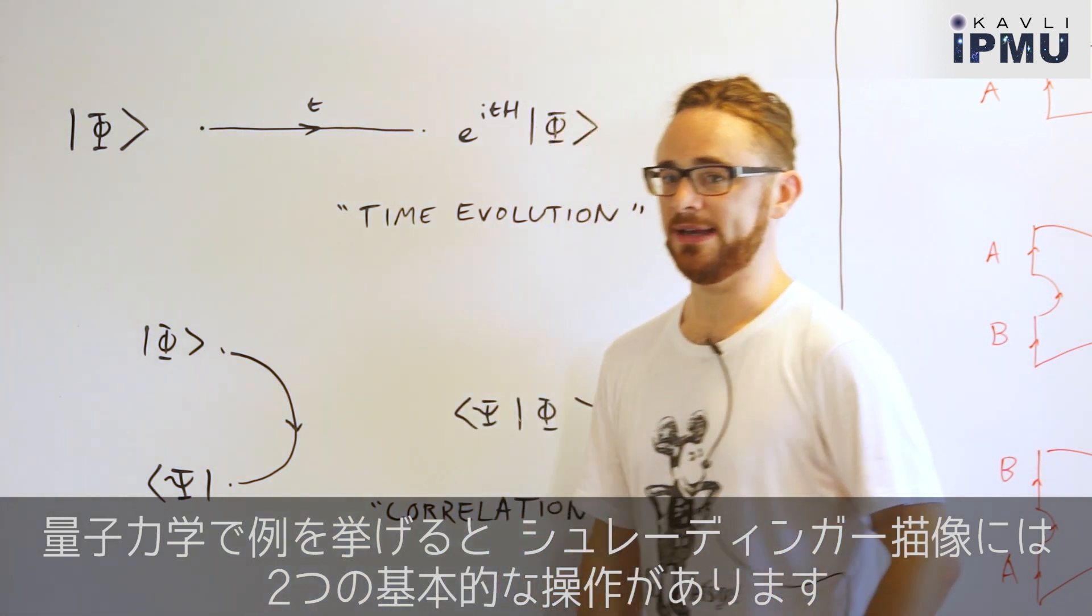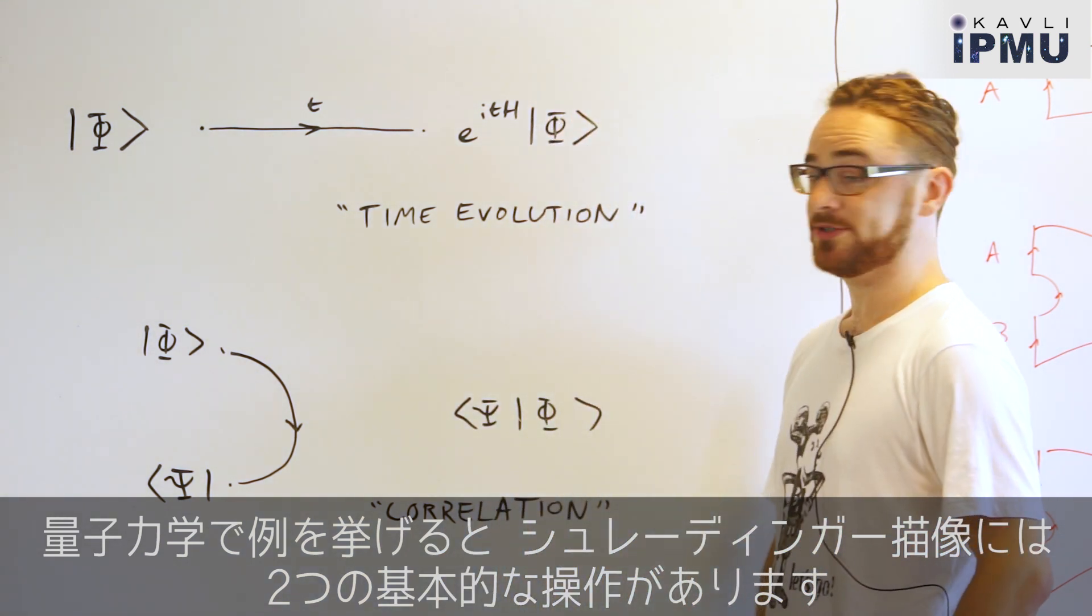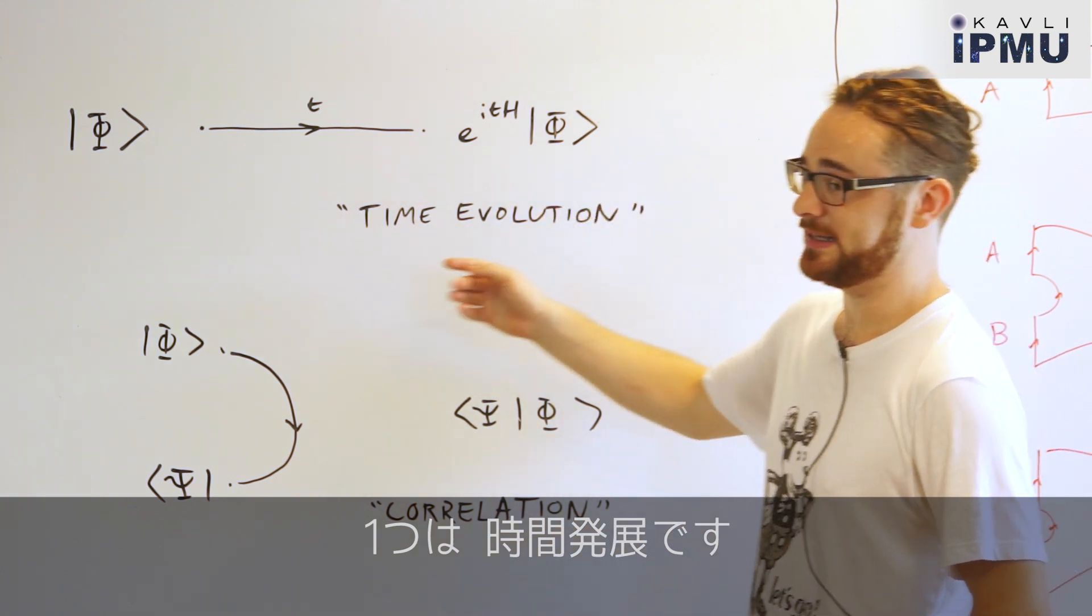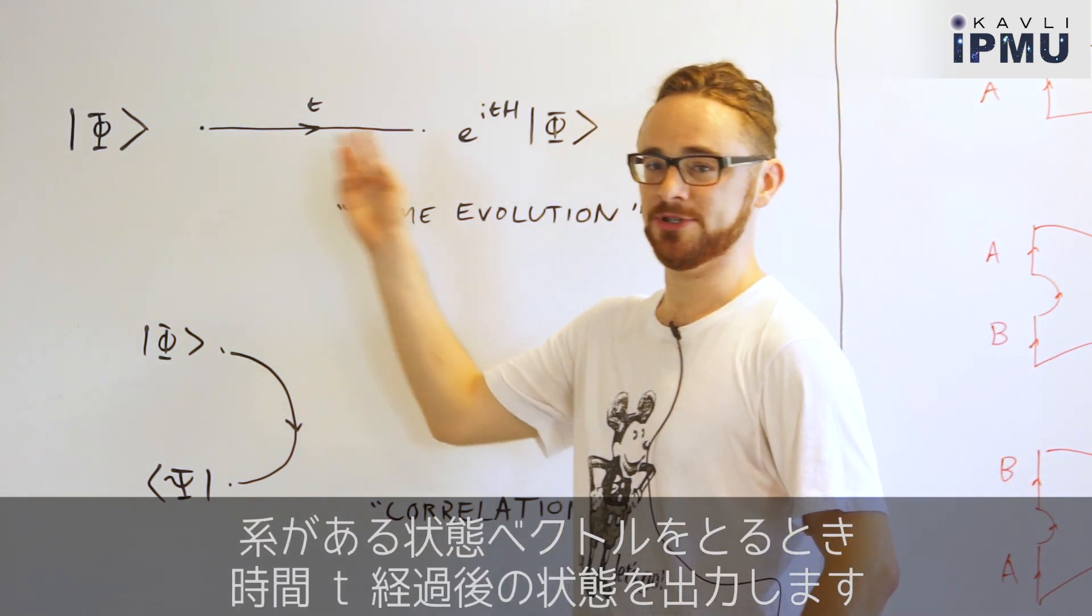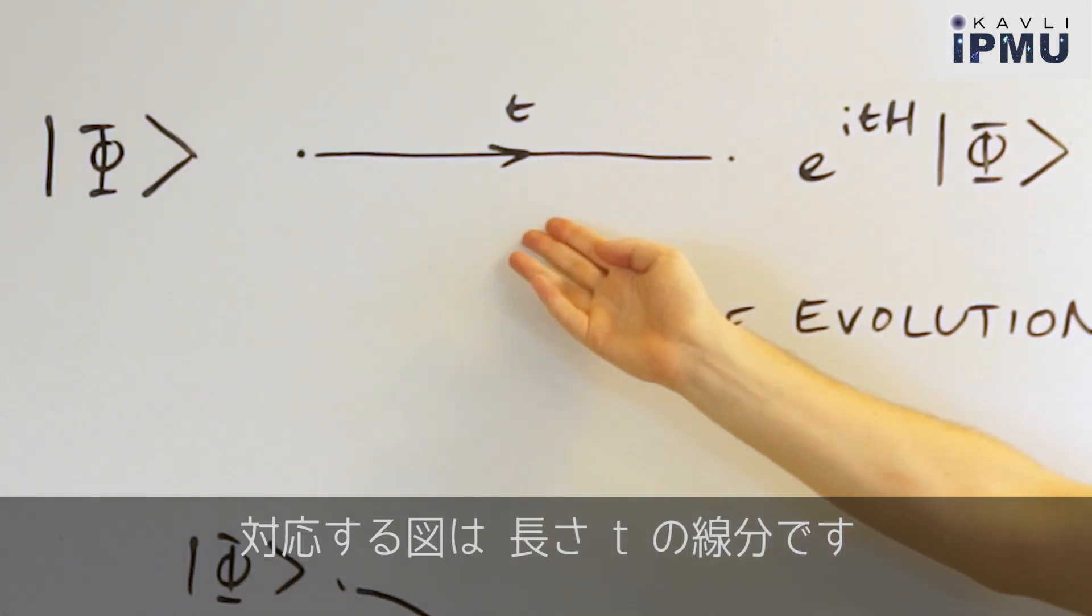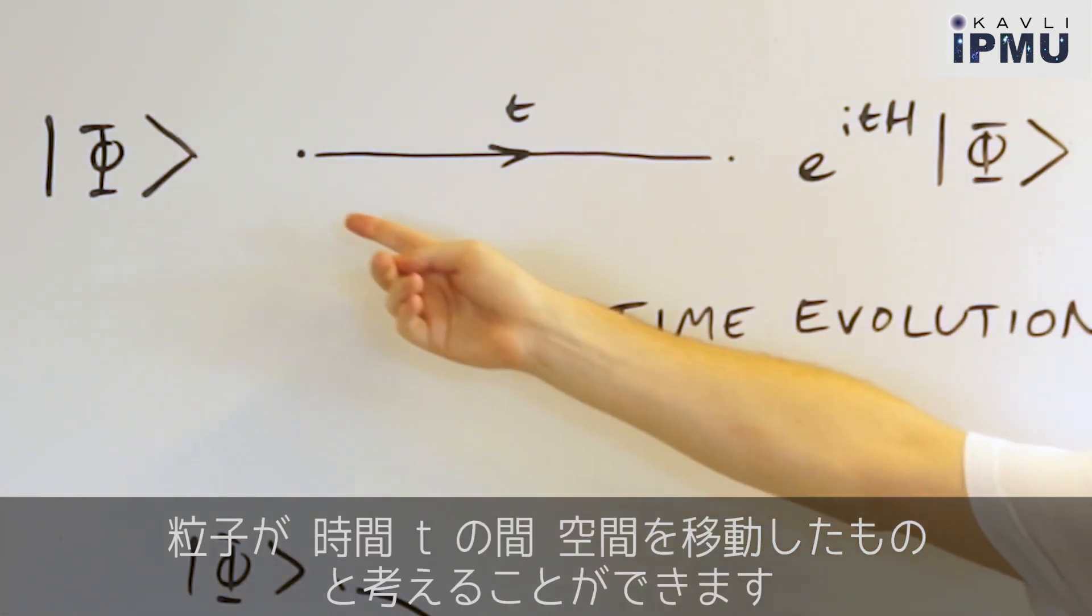For example, in quantum mechanics the Schrodinger picture has two basic operations. The first is time evolution, which takes in a state vector and outputs the state after evolving the system for time t. The corresponding picture is just a line of length t, which can be thought of as a picture of a particle moving through space for time t.